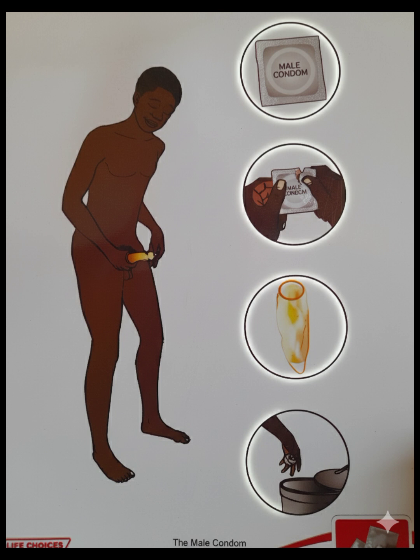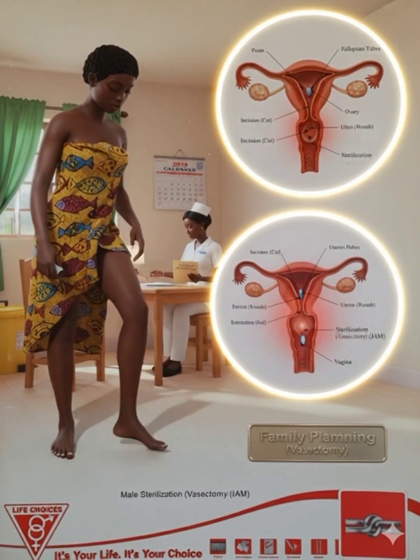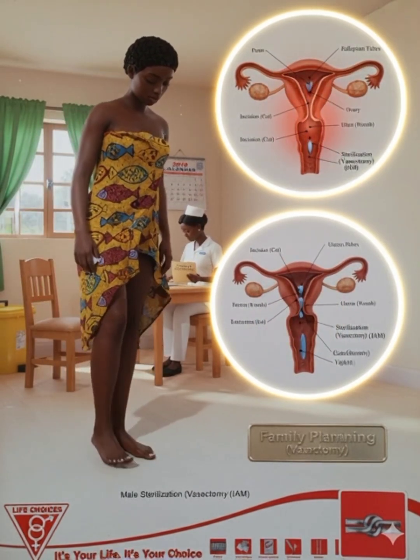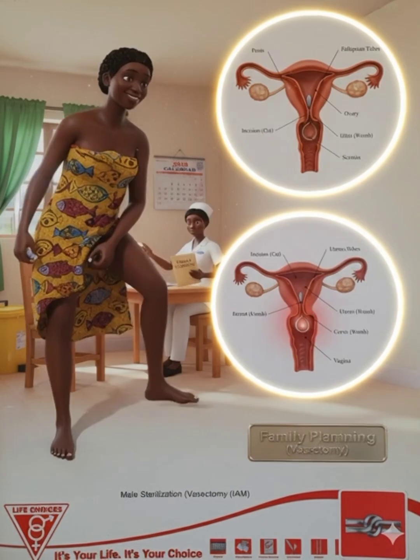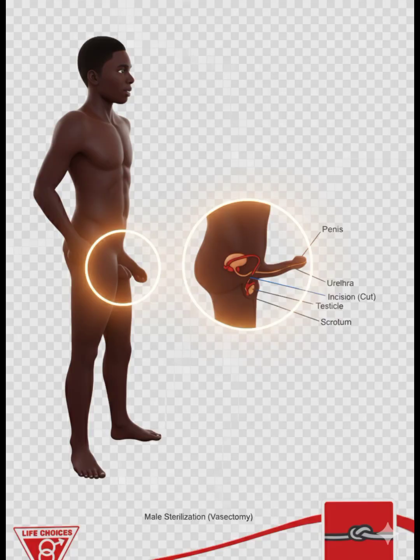Barrier methods work by physically blocking sperm. The male condom's mechanism of action is simple — it collects semen, preventing sperm from entering the vagina. It's the best method for dual protection against pregnancy and STIs. The female condom lines the vagina and prevents sperm from entering. Meanwhile, the foaming tablet's mechanism of action is chemical — it dissolves to release a spermicide that kills sperm.